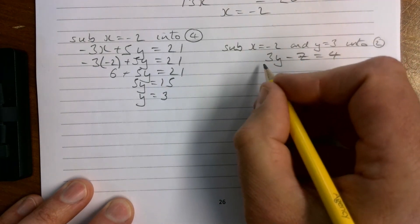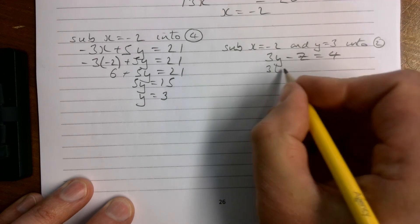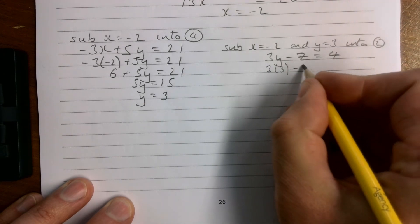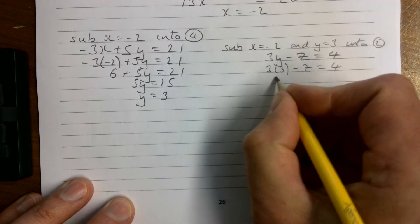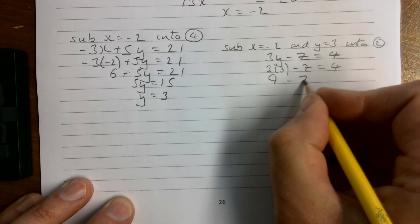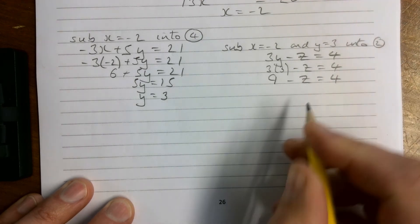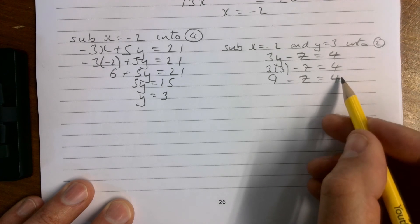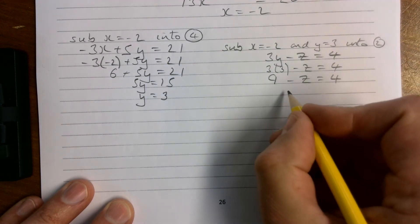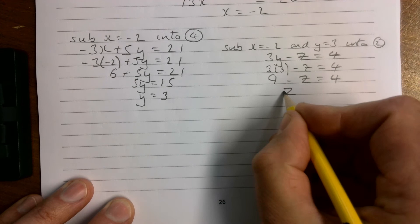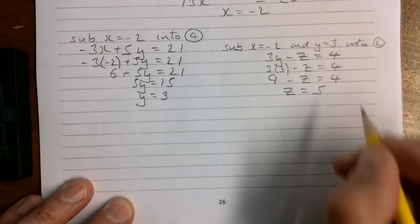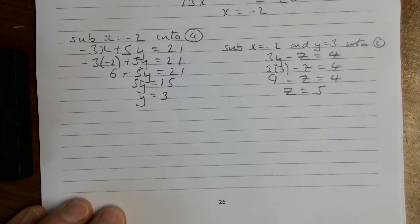Of course there is no x but we're not really substituting the x, it's just standard. So 3 times 3 minus z equals 4, 9 minus z equals 4. I would add z to both sides here and then take away 4, but either way we have z equals 5.